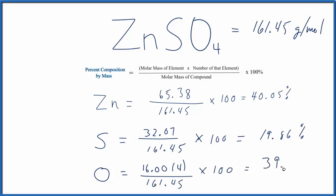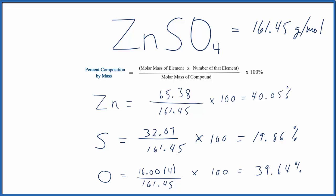and we get 39.64%. And that's how you find the percent composition for each of the elements in ZnSO4 zinc sulfate. This is Dr. B, and thanks for watching.